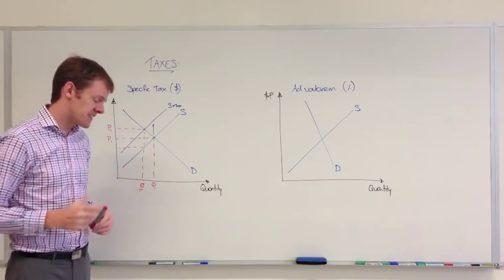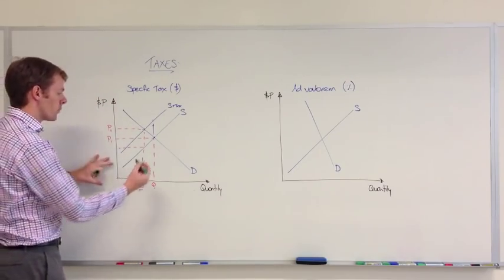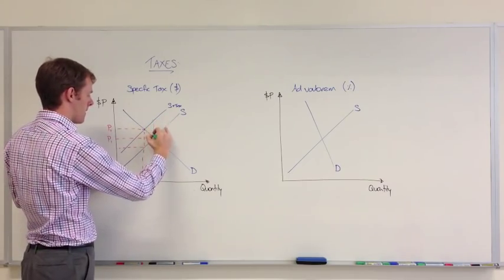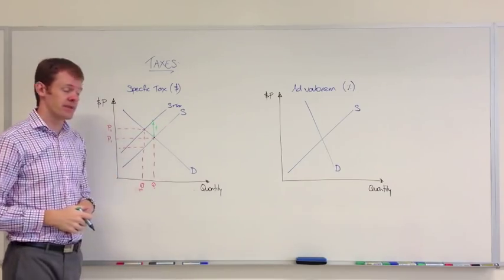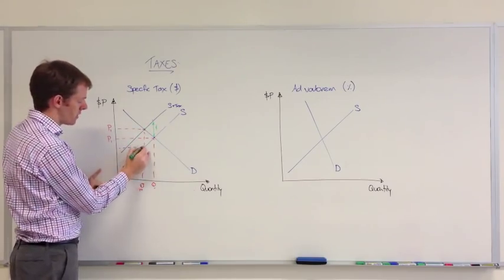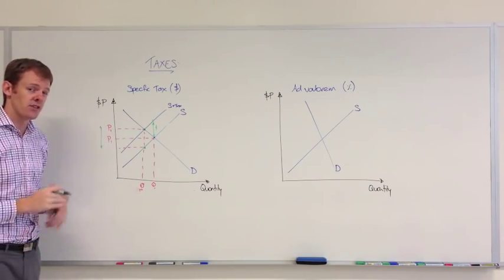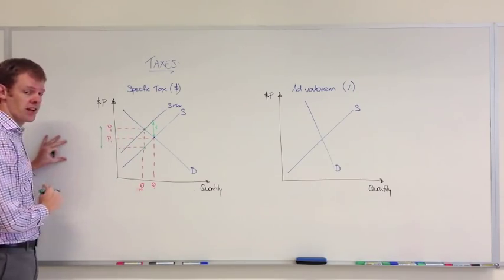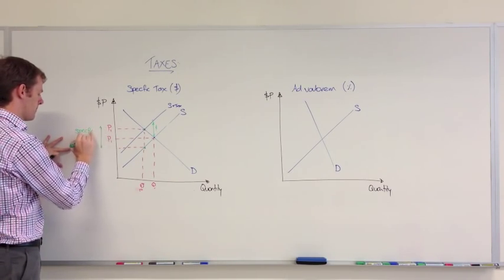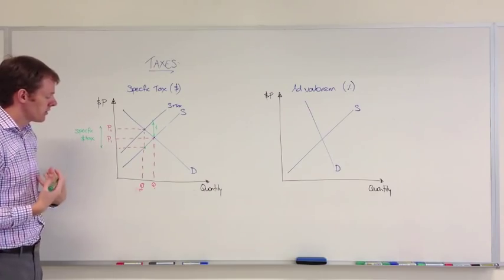In this case, the tax is the vertical distance between the two curves. We can show this in two different ways. We can show it here, with a simple arrow between, and this is our specific tax between the two curves, but it's also between the new equilibrium and down to the previous supply curve there. As you can see, we can show the tax on the vertical axis as well.